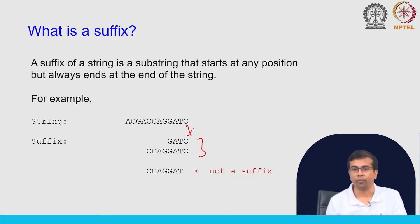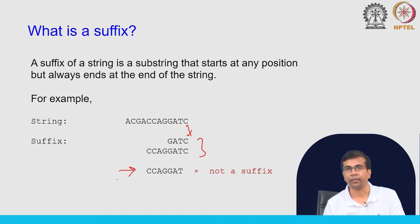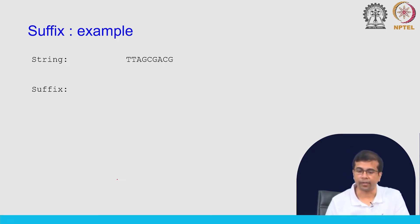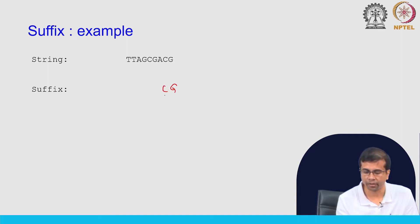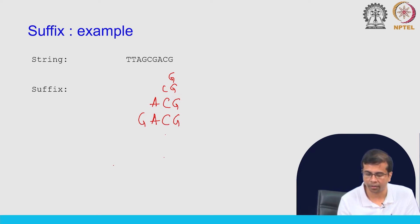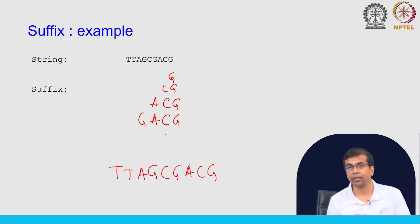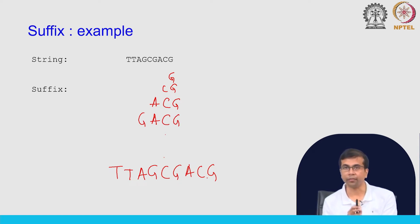We can take a quick example and write down all the suffixes of a string. We start with G, then CG, ACG, GACG, and so on — all the way to TTAGCGACG. These are all possible suffixes of the string. This concept will be useful when we actually go for suffix tree construction.